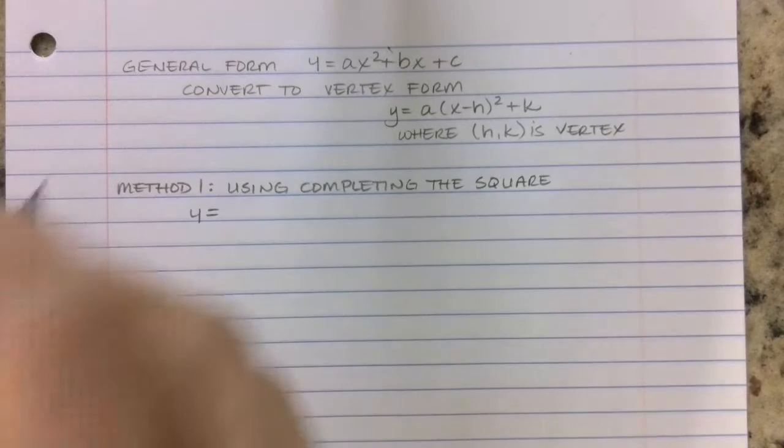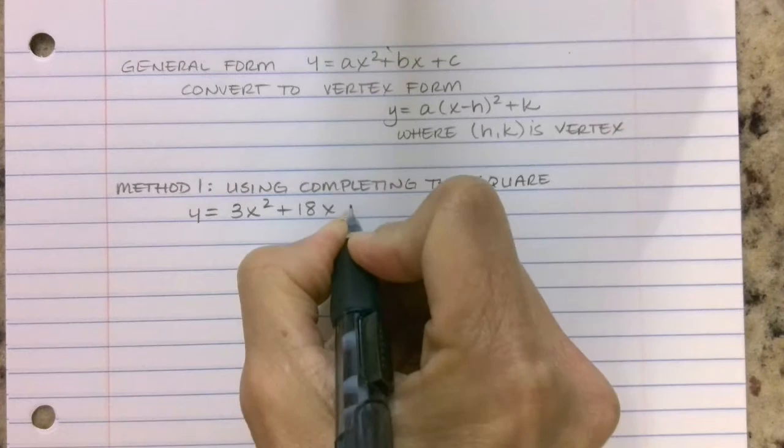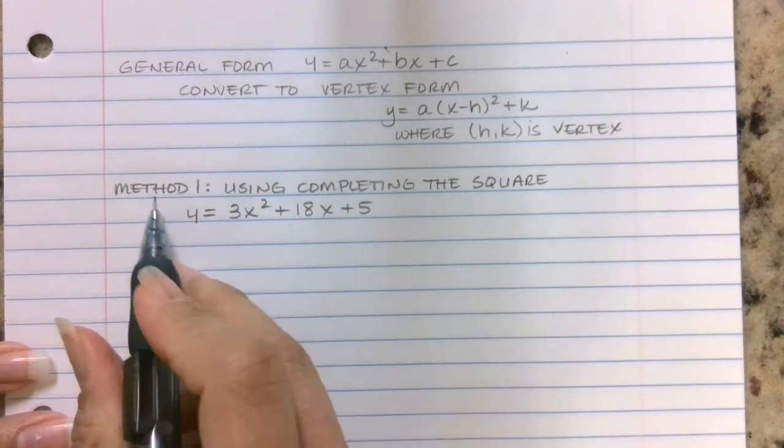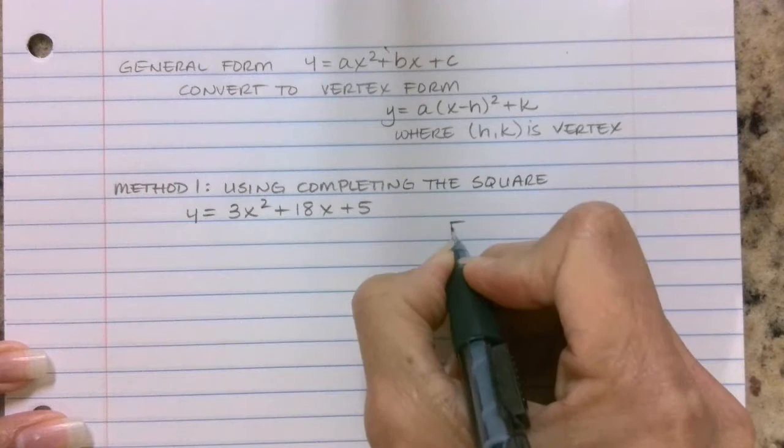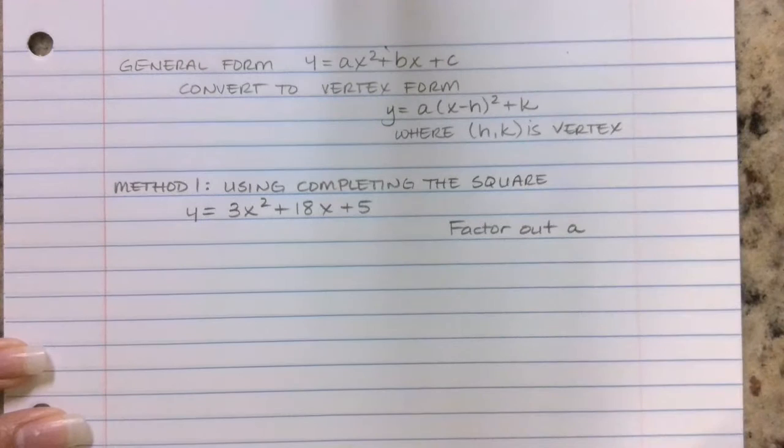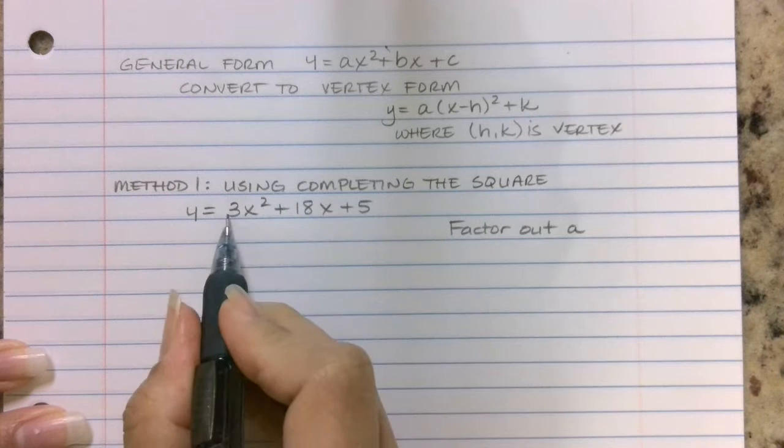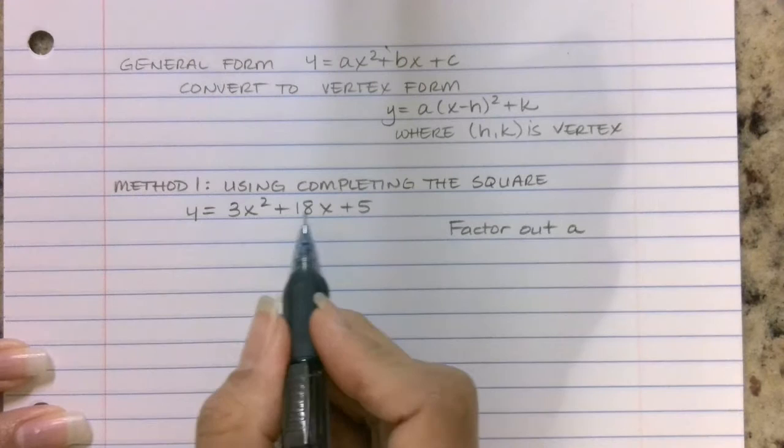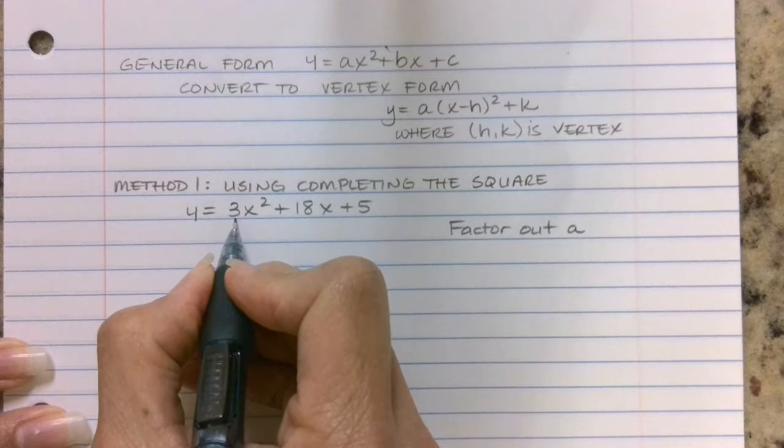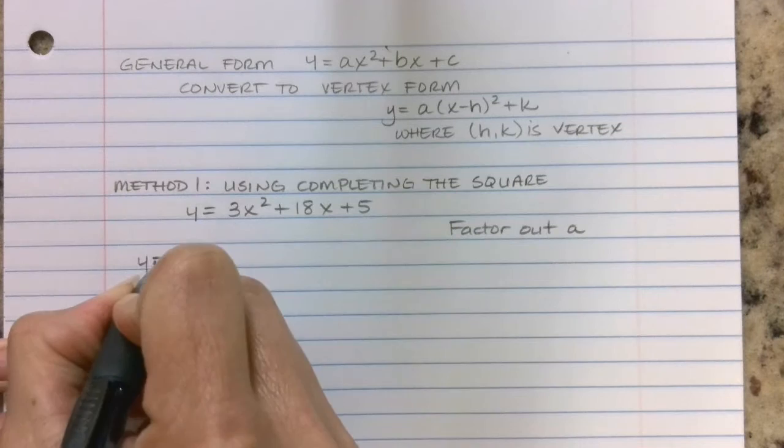We're going to use the example y = 3x² + 18x + 5. The first step in working method number one, using completing the square, is to factor out your a value, but you are only going to factor out the a value from your x terms. So only from the first two terms. So this is a, b, and c.